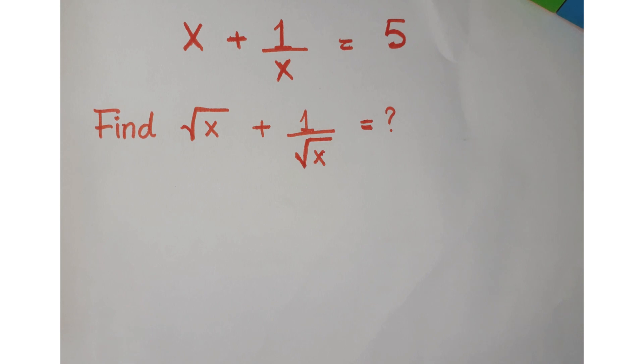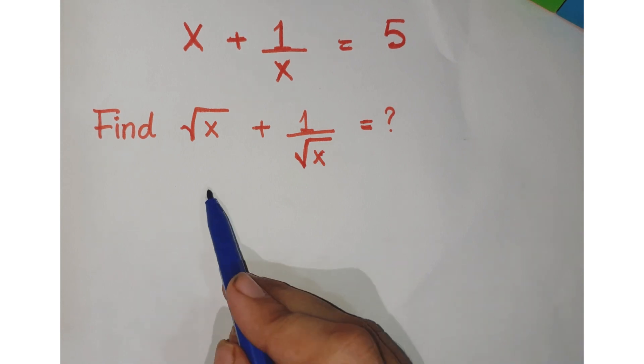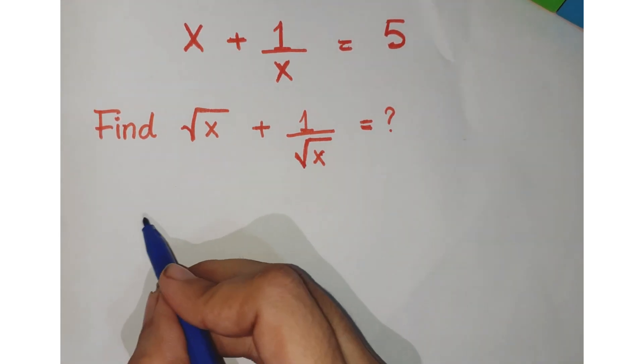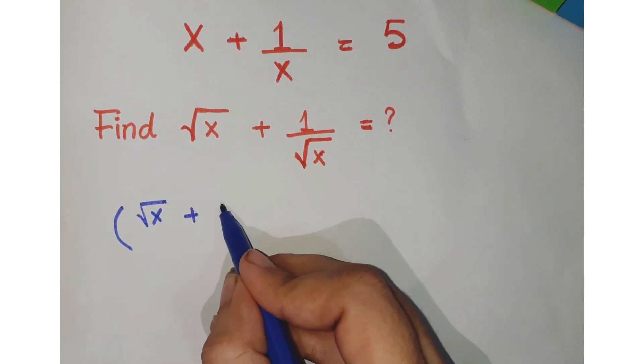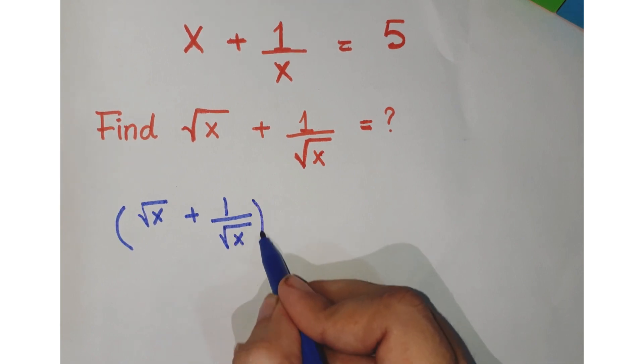So let's see how we proceed. Just taking this value, if you apply the algebraic identity here, that is a plus b whole square.